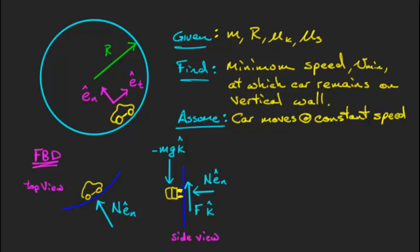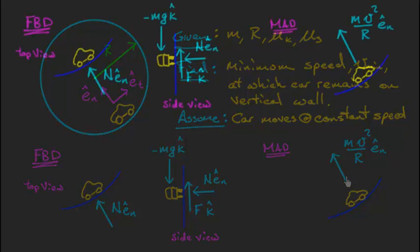Of course, I also need a mass acceleration diagram. Let me try to bring that up. Here it is. Again, looking down from above, from the top, I have a centripetal acceleration towards the center of the loop, in this e hat n direction. And that's proportional to speed squared divided by radius. So that's how that looks. And again, since the car is not speeding up or slowing down, there is no acceleration in the tangential direction.